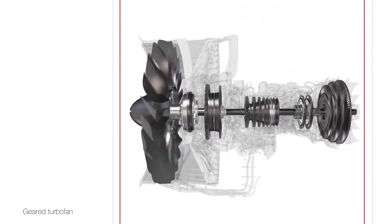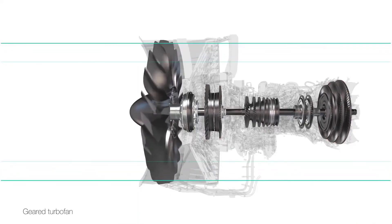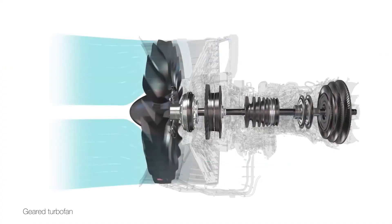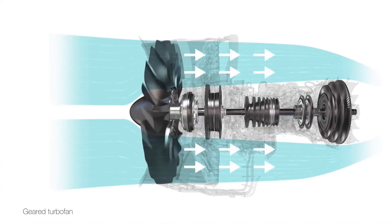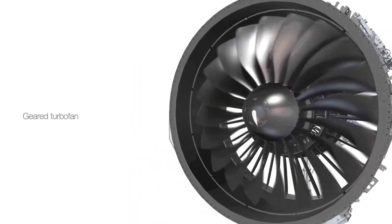A smaller, faster turbine makes the engine shorter and lighter, and thus more efficient. A larger, slower fan lets the engine push more air, meaning more thrust, using less fuel. The slower moving air also makes the engine much quieter.